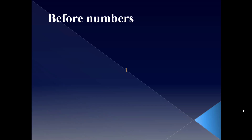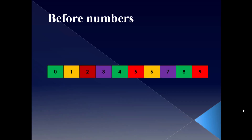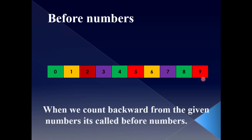Before numbers — what do you mean by before numbers? Let me understand through this number strip. This is a number strip; it contains 0 to 9 numbers. When we count backward from the given numbers, it's called before numbers.